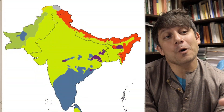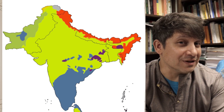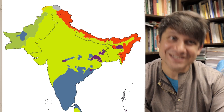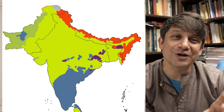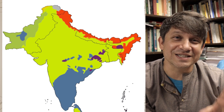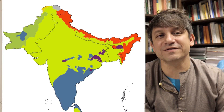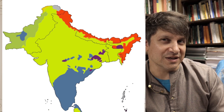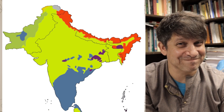So there you have it — the four big language families of South Asia. In the next segment, we'll take a closer look at what historical linguists have discovered about the biggest one: the Indo-European language family.